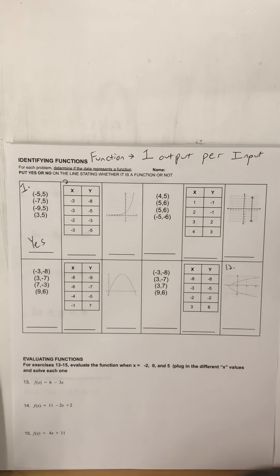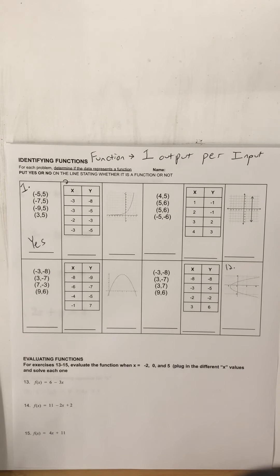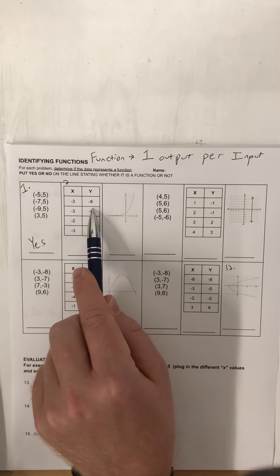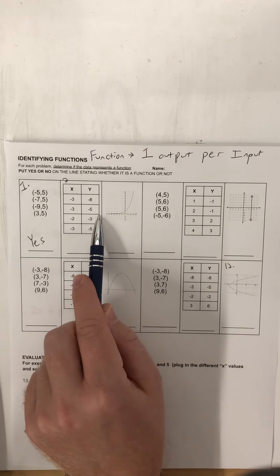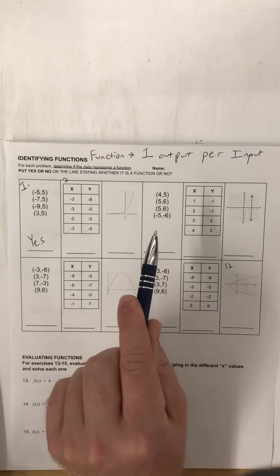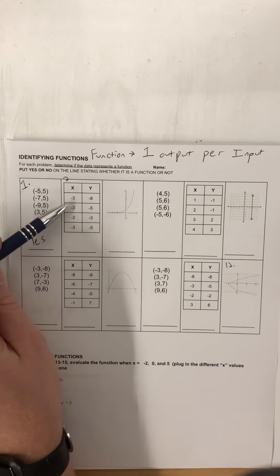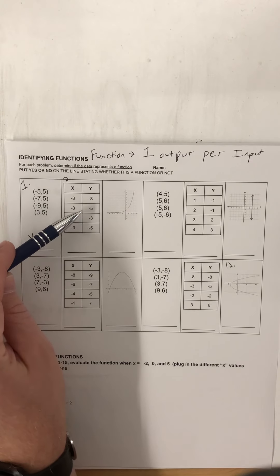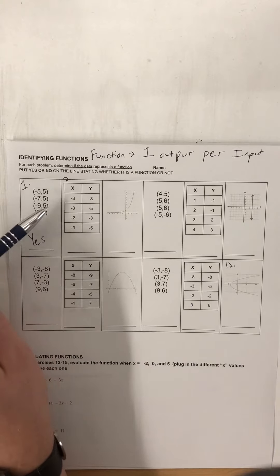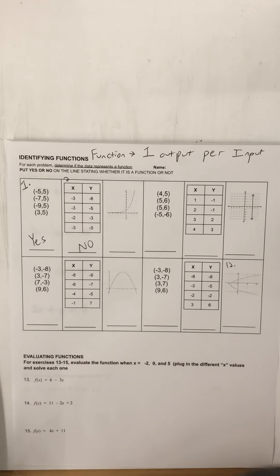Number two — someone besides Christopher, tell me if this is a function or not. Check the chat. A function is one output for every input. If we notice, we have a negative three for our input and then a negative eight... but then we also have a negative three and a negative five. This should be a red flag automatically — we have the same input of negative three but two different outputs. If you have two outputs per one input, we do not have a function.